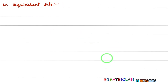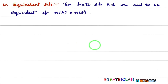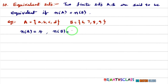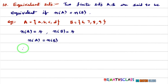The tenth type is equivalent sets. Note that equivalent sets are different from equal sets. What is meant by equivalent sets? Two finite sets A and B are said to be equivalent if the cardinal number of set A is the same as the cardinal number of set B. For example, if cardinal number of A is 4 and cardinal number of B is 4, then sets A and B are equivalent sets.